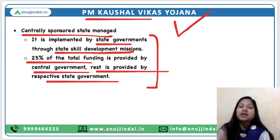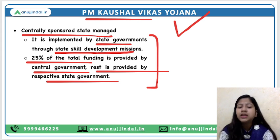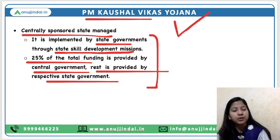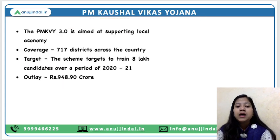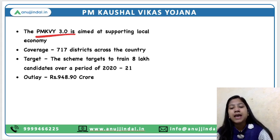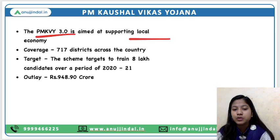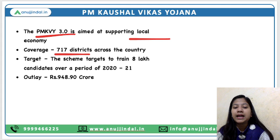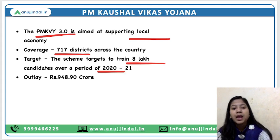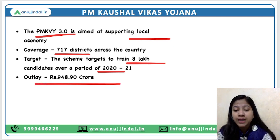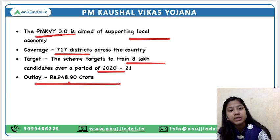If you are not able to understand any point in this video or on this scheme, you can mention it in the comment section below. The 3.0 version of this scheme aimed at supporting the local economy, with coverage of 717 districts and a target to train 8 lakh candidates over a period of 2020 to 2021, with an outlay of 948.90 crore rupees.